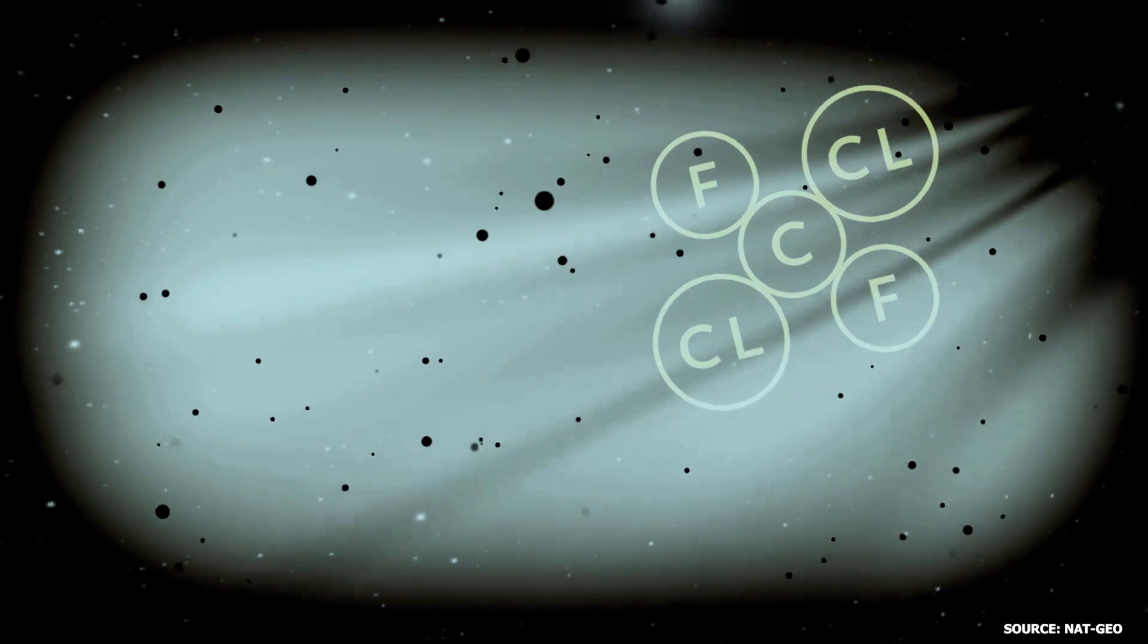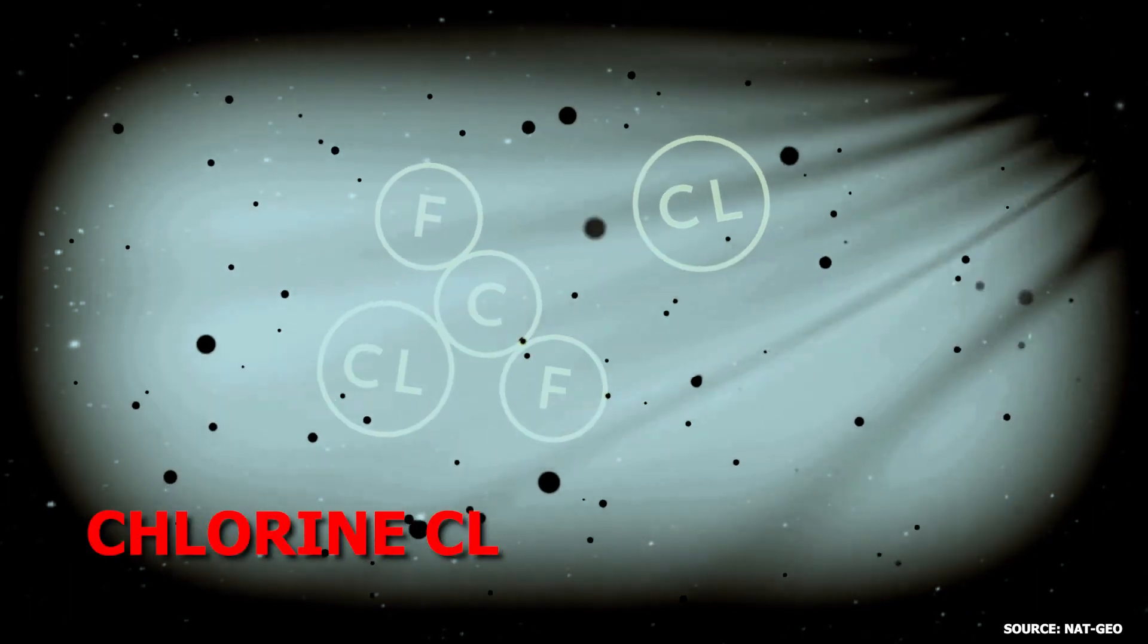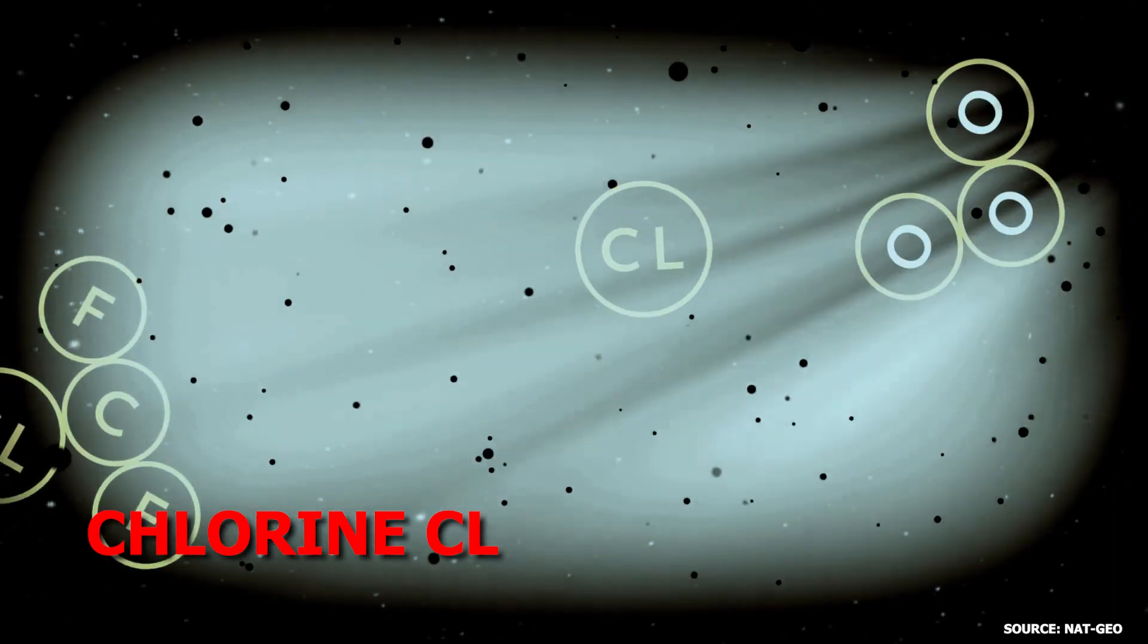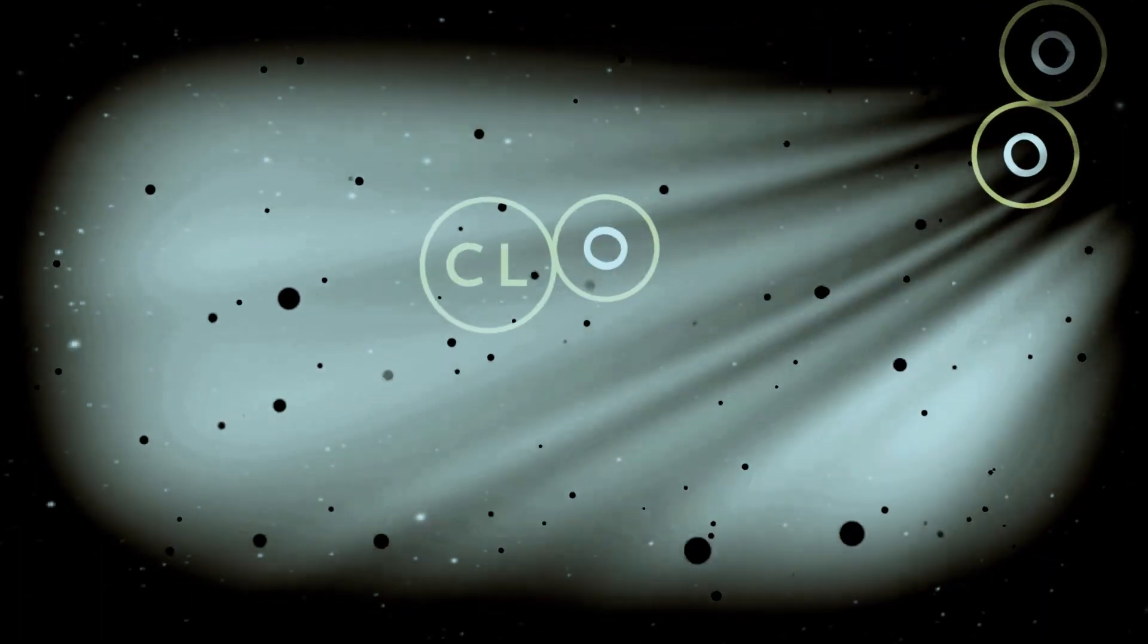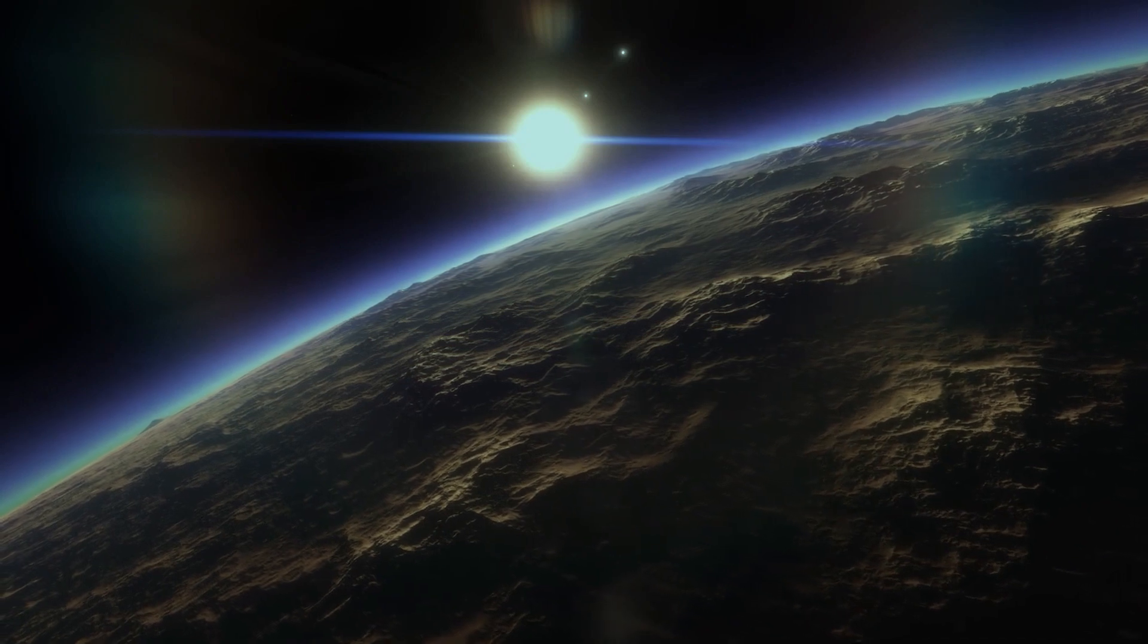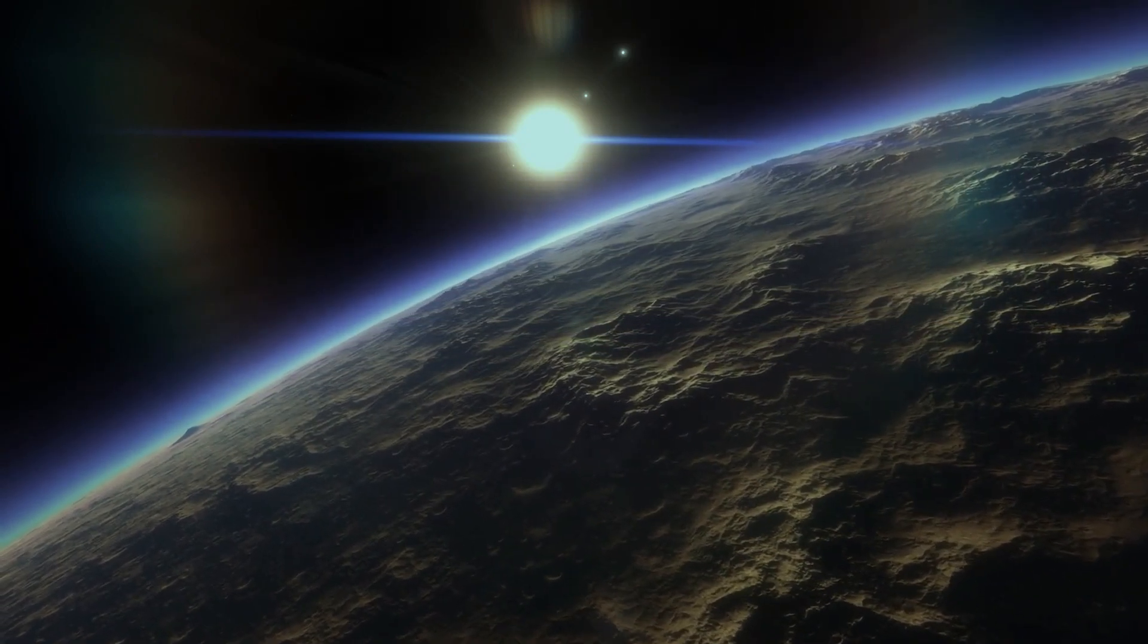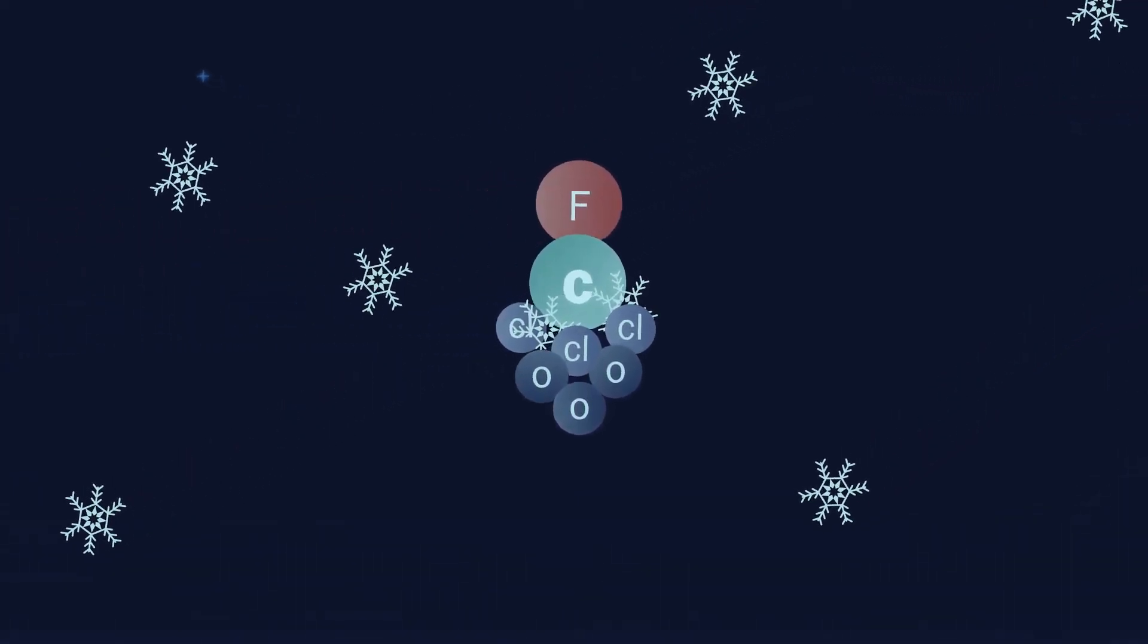But when these CFCs went up into the sky and met sunlight, they released a substance called chlorine. This chlorine started attacking the ozone molecules, breaking them apart, and in the process, more chlorine got released. It was like a domino effect. One bit of chlorine could damage lots of ozone molecules, and this harmful cycle just kept going. In essence, these everyday chemicals were creating a destructive cycle high in our atmosphere, eating away at the protective ozone layer.